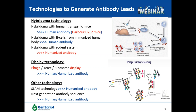Besides the hybridoma and library approaches, there are other technologies for generating therapeutic antibodies, including the SLAM technology, which recovers variable region sequences from specific single B cells from immunized animals and is able to generate humanized antibodies. More recently, next-generation antibody sequencing from naive or immunized individuals can also be applied to generate human or humanized antibodies.